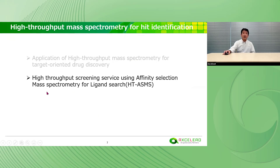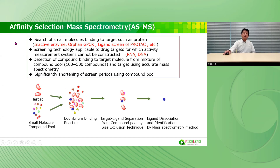Next, HT-ASMS screening service using affinity selection mass spectrometry for ligand search. From now on, affinity selection mass spectrometry will be abbreviated as ASMS. ASMS searches for small molecules binding to targets such as protein, inactive enzyme, orphan GPCR, and ligand search for RNA and DNA. ASMS is a screening technology applicable to drug targets for which an activity measurement system cannot be constructed.